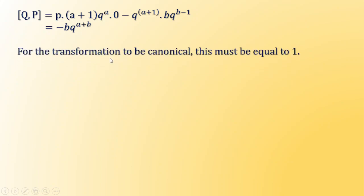For the transformation to be canonical, [Q,P] must be equal to 1. That is, -b·q^(a+b) must equal 1.